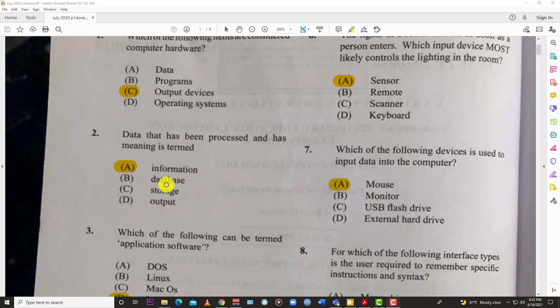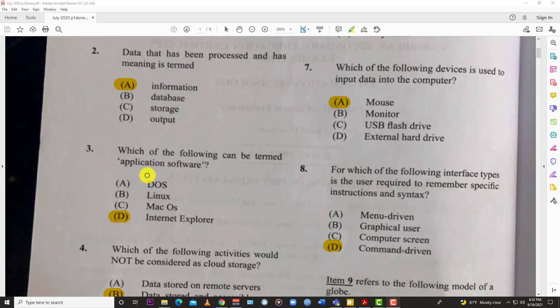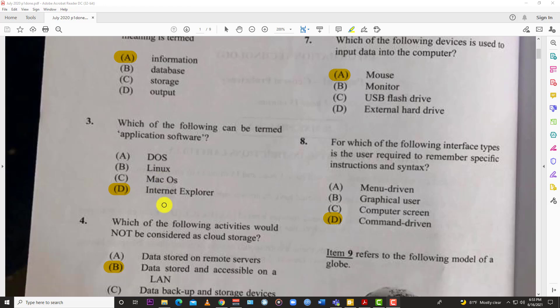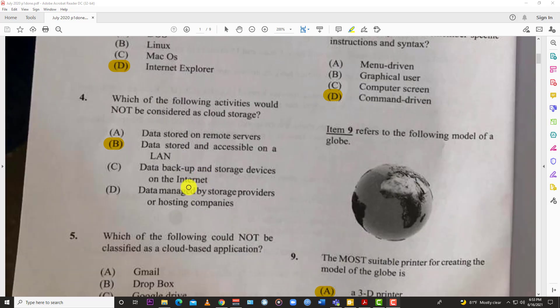Number three: which of the following can be termed application software? We have DOS, Linux, and Mac OS - all these are basically operating systems. DOS way back in the day, Linux alternative to Windows, and Mac OS which is used on Macintosh. But Internet Explorer is an application software used on Windows machines to access the Internet.